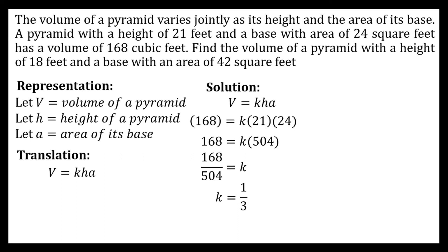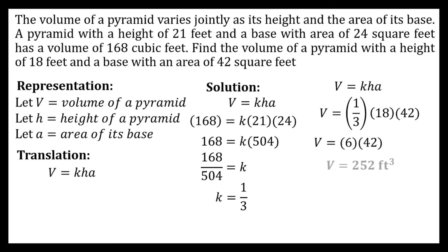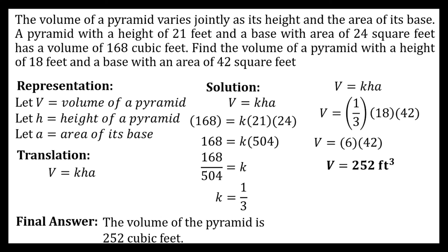Now using the constant of variation, we can find the volume of a pyramid with a height of 18 feet and a base area of 42 square feet. Using the same equation: V is equal to one third times 18 times 42. Multiplying one third and 18 gives 6, then 6 times 42 gives the volume of the pyramid, which is 252 cubic feet.